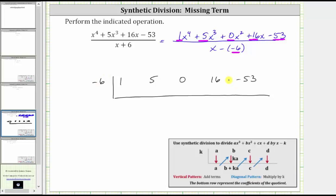And now to complete the table and to perform the synthetic division, the pattern is going to be to add the terms vertically, and on the diagonal, multiply by k. To begin, we bring the one down.